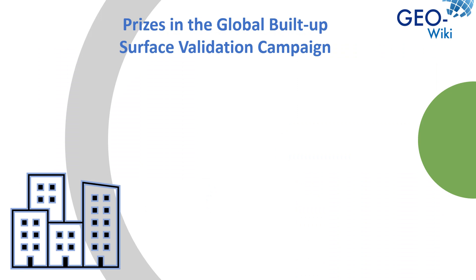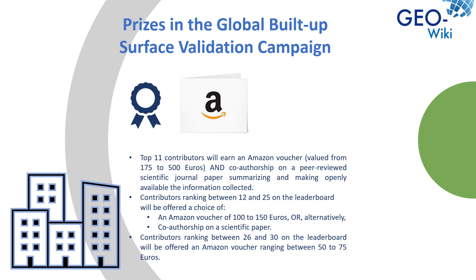As in previous GeoWiki campaigns, we will reward our participants with prizes. The top 30 participants who contribute the most, which is measured by a combination of the quality score and the quantity of validations done, will be offered prizes in the range of 50 to 500 euros. Participants will also get the chance to become a co-author on a scientific paper. If you click on the leaderboard button on the left-hand side of GeoWiki and then click on the campaign aims and prizes link, you can find more details there.